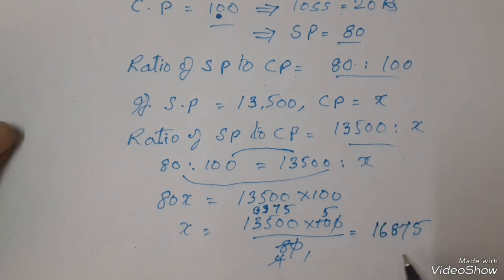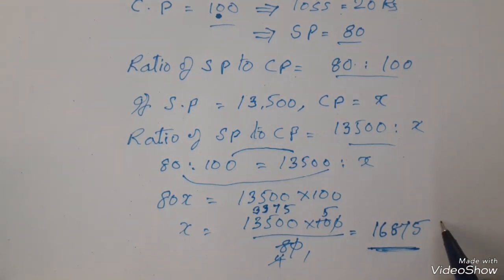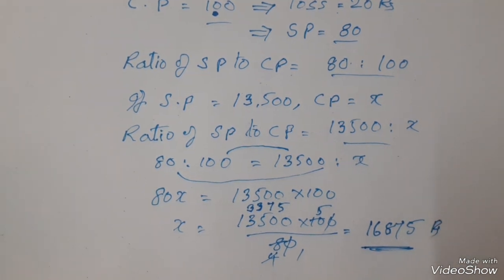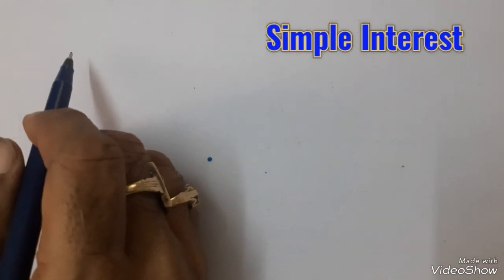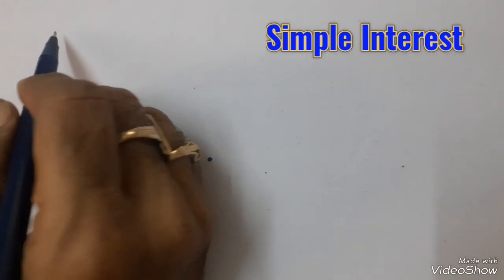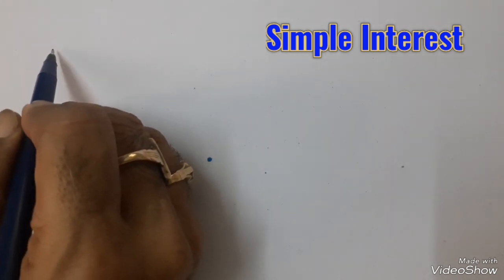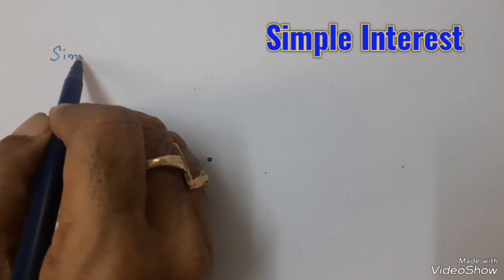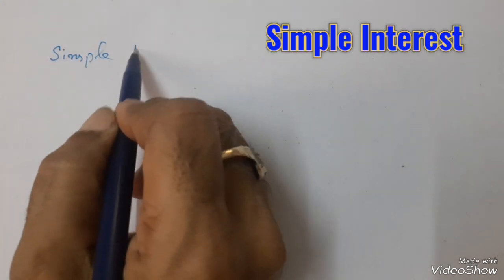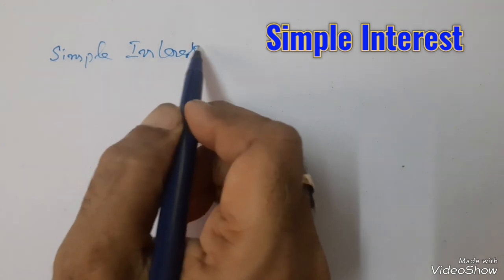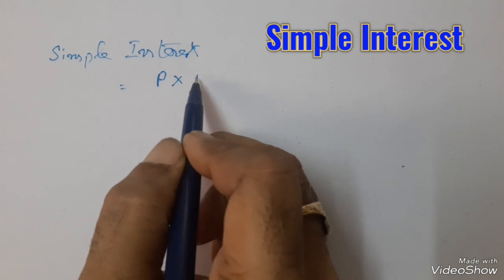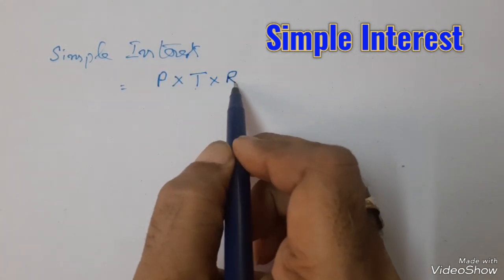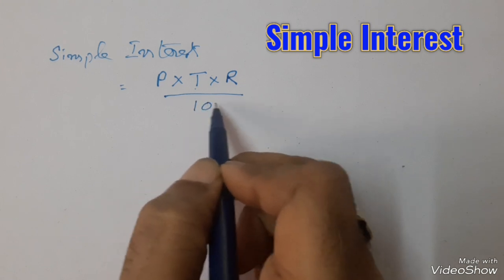So the cost price of the washing machine is 16,875. We can also use percentages in finding simple interest. The simple interest formula is: SI equals principal P into time T into rate R percentage, divided by 100.